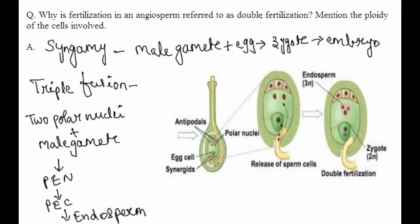Why is fertilization in an angiosperm referred to as double fertilization? Mention the ploidy of the cells involved. At the time of fertilization in angiosperms, the pollen tube brings two male gametes inside the embryo sac, and there are two processes that occur.